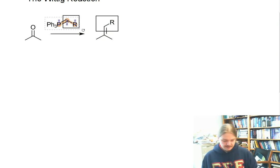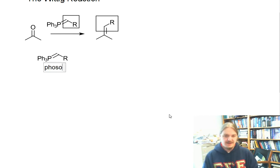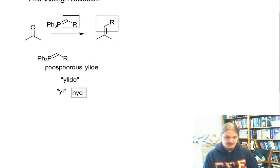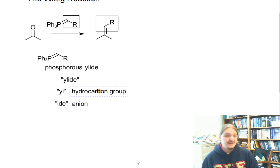So this thing here is called a phosphorous ylide. Phosphorous because it has a phosphorus atom in it. And ylide, or ylid, is the combination of two suffixes: yl, as in like alkyl, hydrocarbon group. And ide, which is a prefix that means anion. So this is the thing that should act like a carbanion.